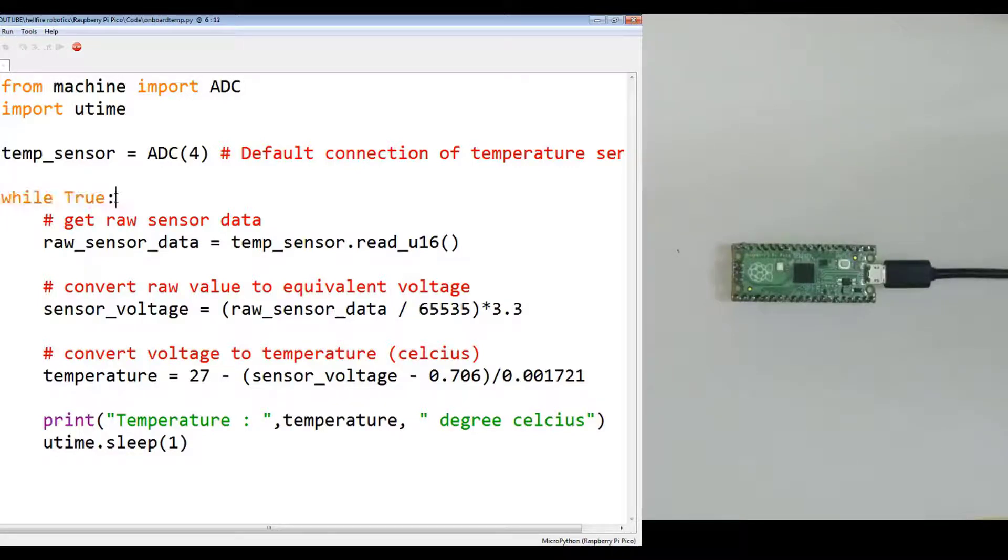Now, while True, create an infinite loop. First you have to get the raw sensor data. Raw sensor data equals temp_sensor.read_u16(). U means unsigned, 16 means 16-bit ADC data. You have to apply this method on the defined sensor pin and you will get the raw sensor data.